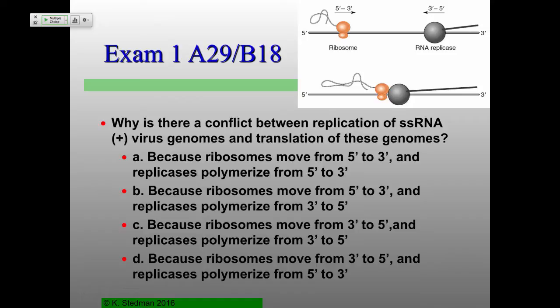A student asks: doesn't the conflict arise because the replicase is proceeding in the wrong direction? Yes — it's proceeding in the wrong direction. I was careful to use 'polymerize' rather than 'move,' because move would have been really confusing. The polymerization, because it's moving along the template in the opposite direction, will lead to a conflict. If it's not polymerizing, there's no conflict — they're not running into each other.